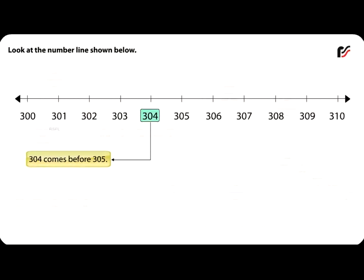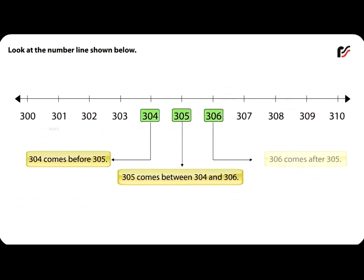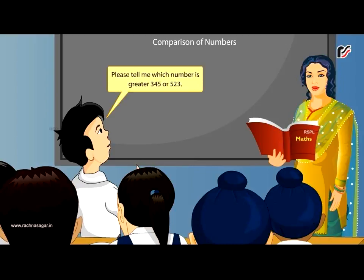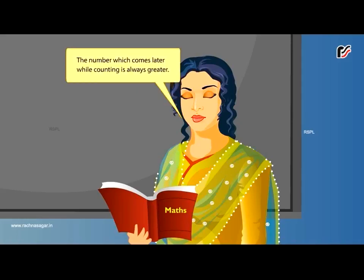Three hundred five comes between three hundred four and three hundred six, and three hundred six comes after three hundred five. Comparison of three-digit numbers: please tell me which number is greater — three hundred forty-five or five hundred twenty-three? The number which comes later while counting is always greater. So, five hundred twenty-three is greater than three hundred forty-five.